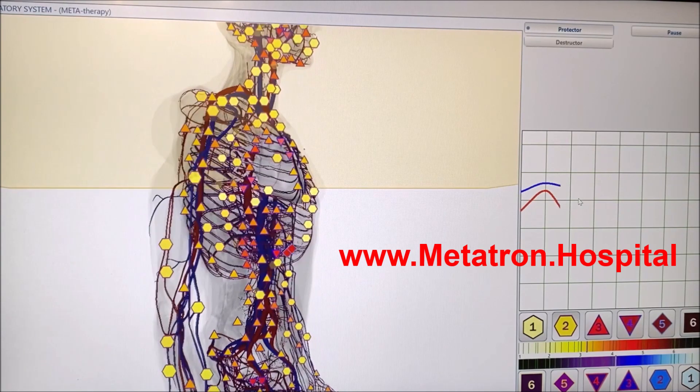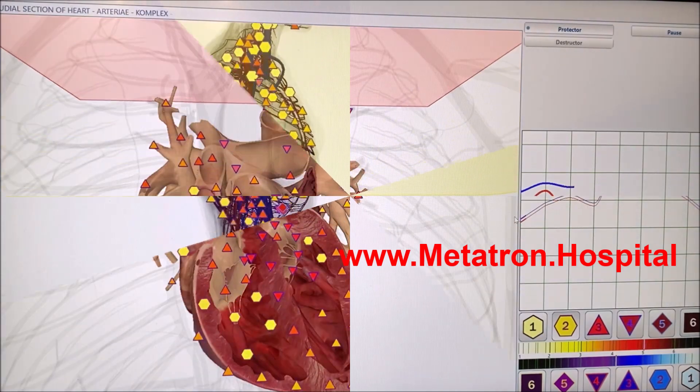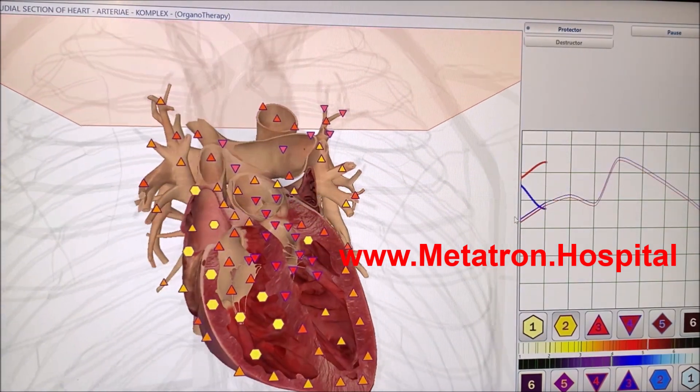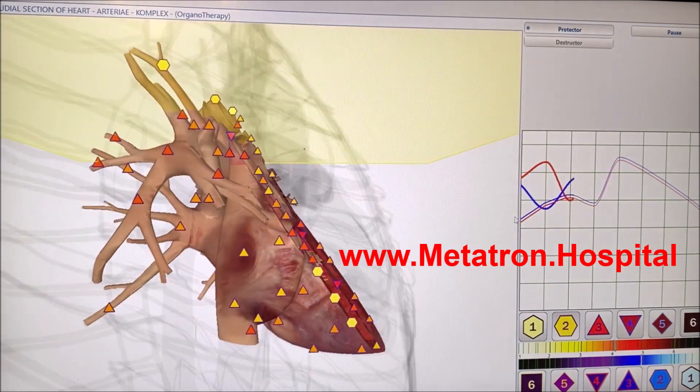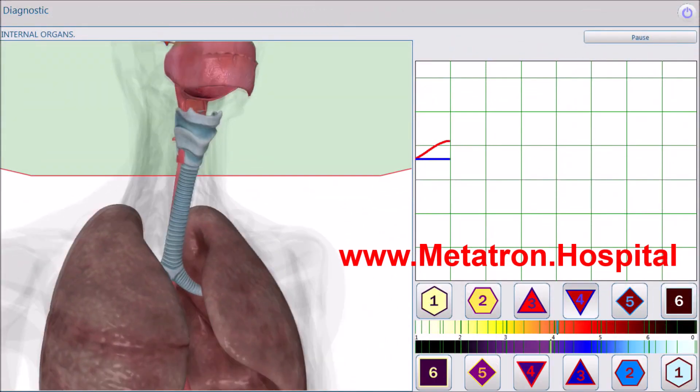The Metatron system applies the following therapies: elimination of viruses and bacteria, organotherapy, Bach therapy, metatherapy, phytotherapy, lithotherapy, and acupuncture.